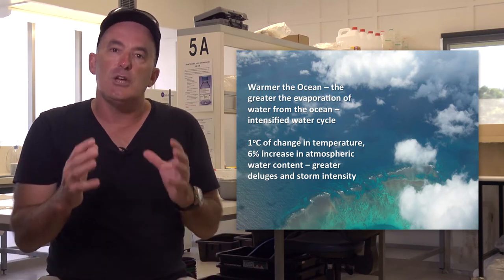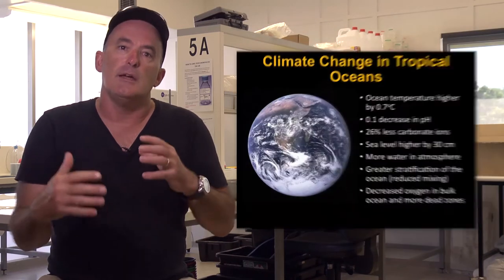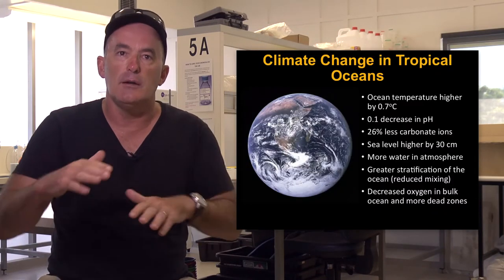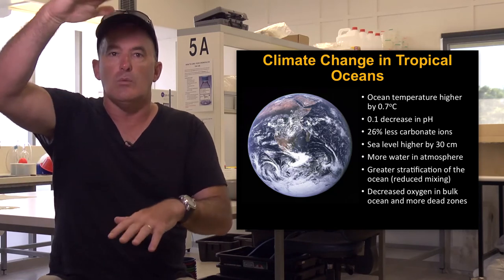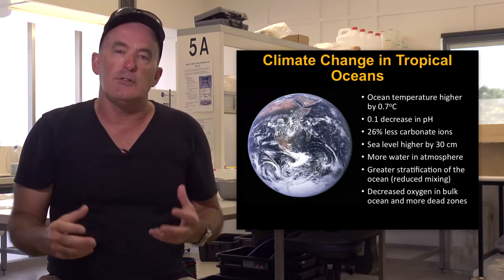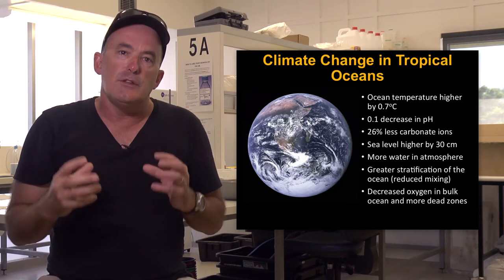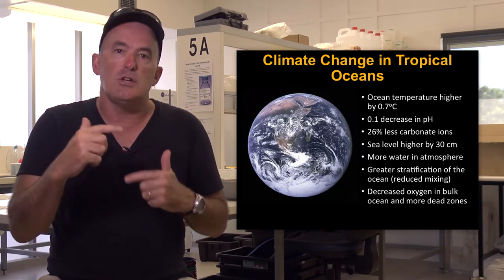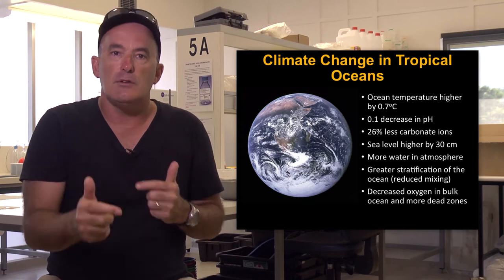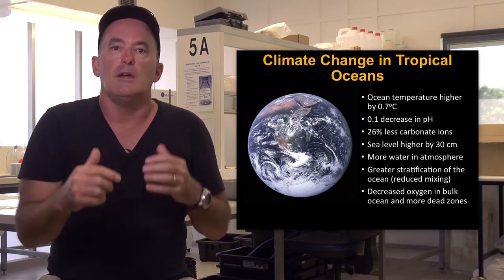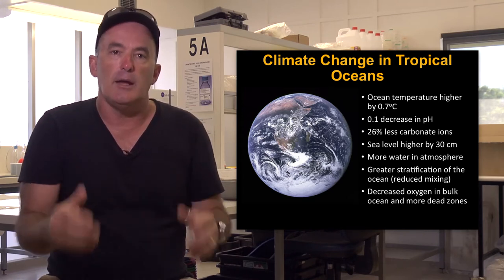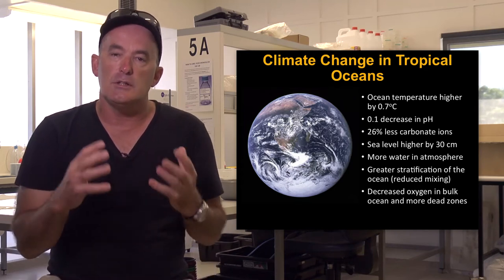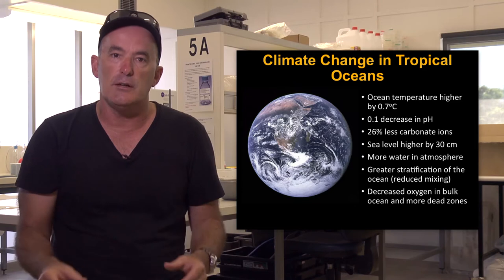The third change to tropical oceans is the fact that the water column is becoming more stratified, which is a consequence of warm water being less dense than cold water. This is reducing the amount of mixing in the upper layers of the ocean, a change which reduces the amount of nutrients being supplied to the upper layers of the ocean. All of these factors are changing the conditions surrounding tropical coastal ecosystems.